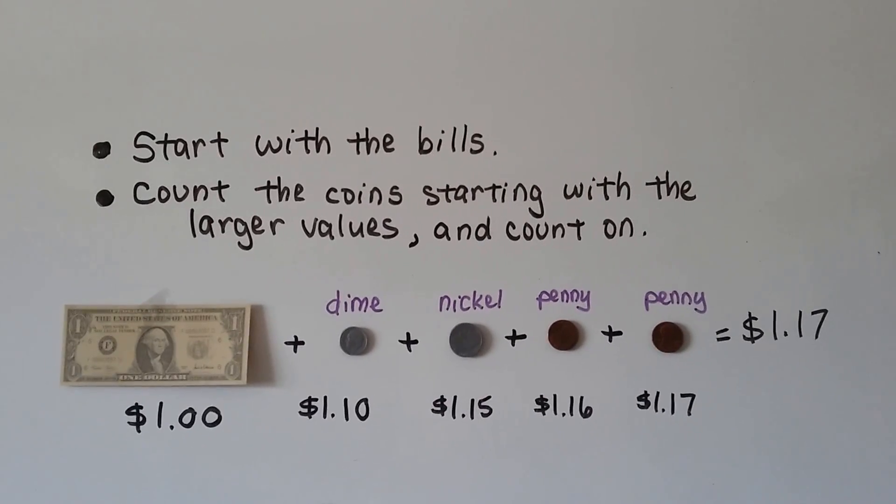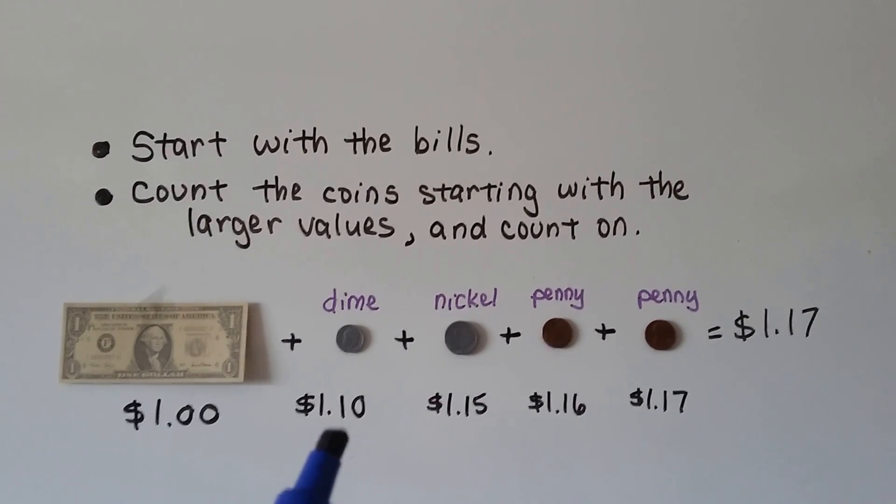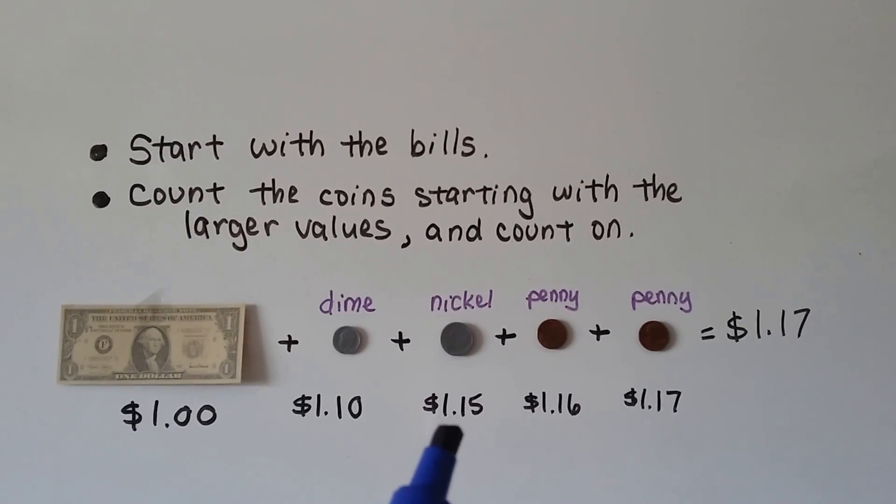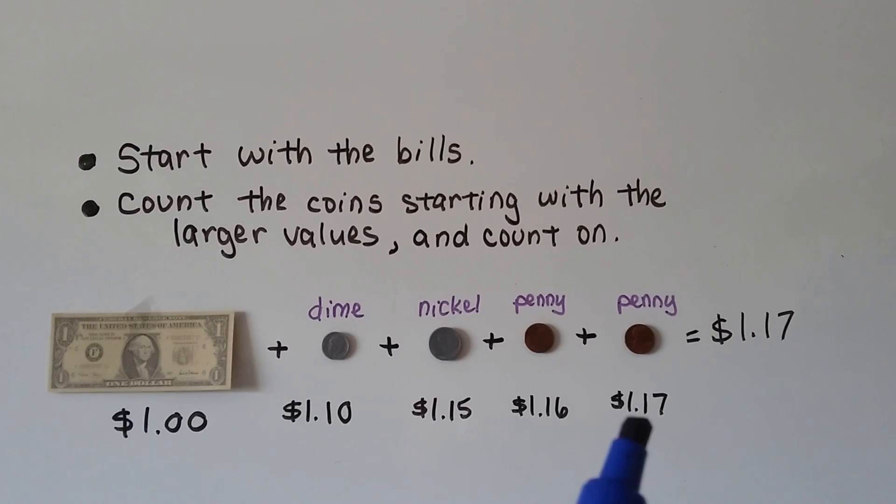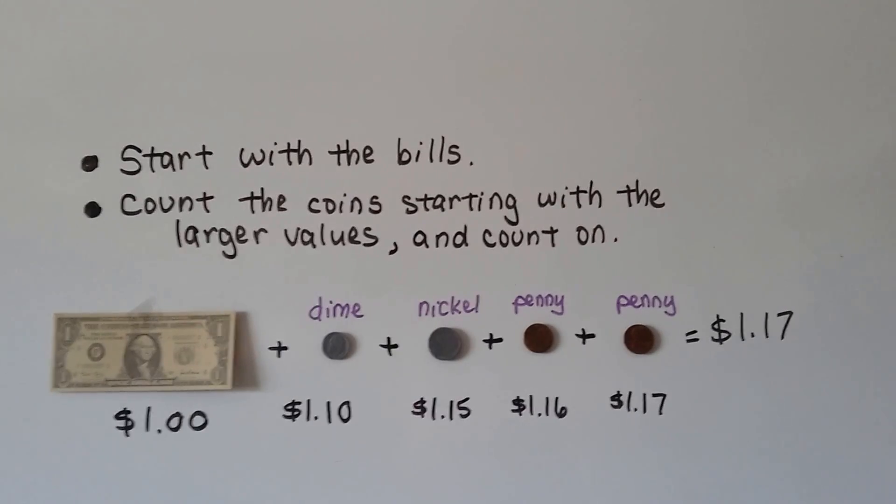We have one dollar. We add the dime, that's 10 cents. We have $1.10. We add the nickel, that's five cents. Now we have $1.15. And we add the pennies. We have $1.16, $1.17, and our total is $1.17.